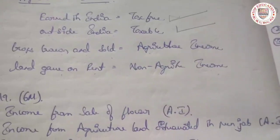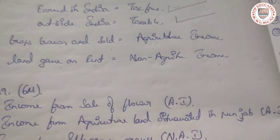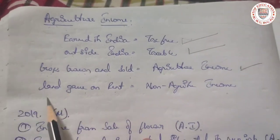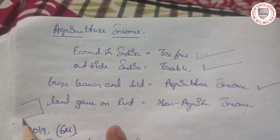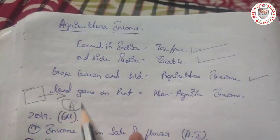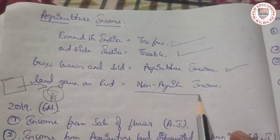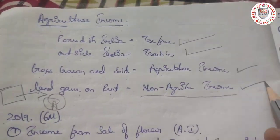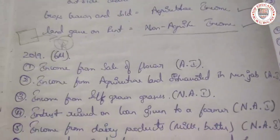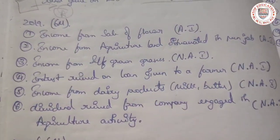Crops grown and sold — when we grow crops and sell them, that is called agriculture income. But if we are giving the land for rent to a person, then that is not called agriculture income — it is non-agriculture income. Now let's move to the questions and see how they will ask.